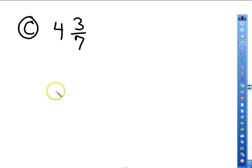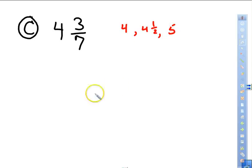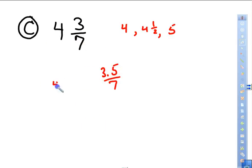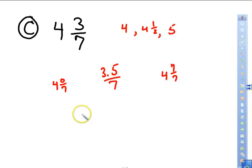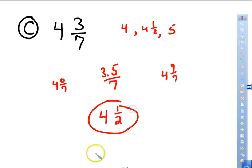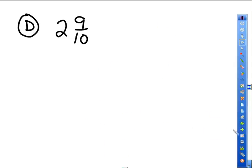Next problem: four and 3/7. The options are four, four and a half, or five. Half of seven is 3.5, which equals exactly one half of the denominator. Three is very close to 3.5, and comparing to four and 0/7 versus four and 7/7, three is much closer to three and a half than to zero. So this rounds to four and one half.